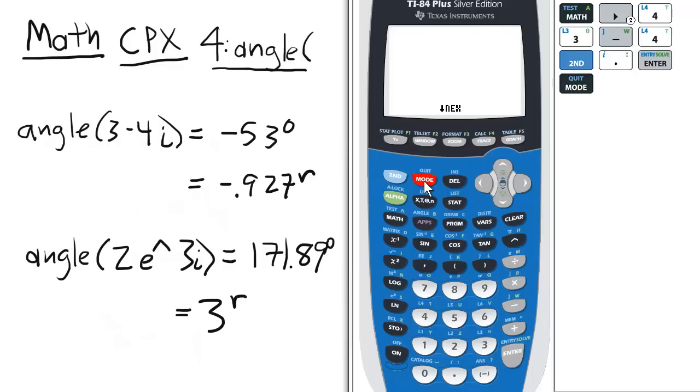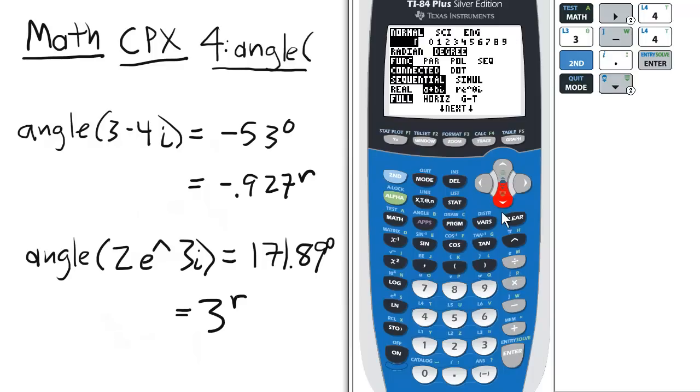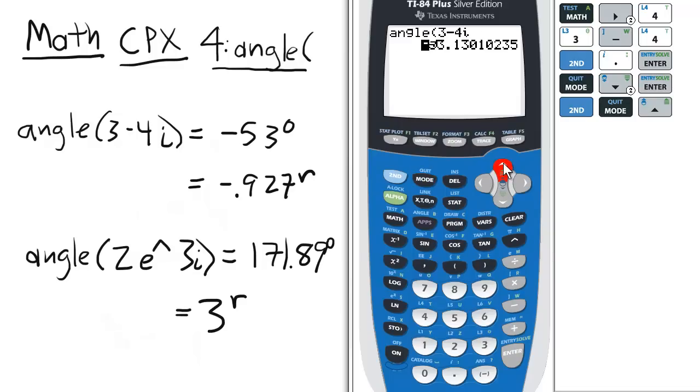Now if we change the mode into radians, we do the same problem again, so I'm just going to scroll up to that and press enter, and notice it's negative .927 in radians.